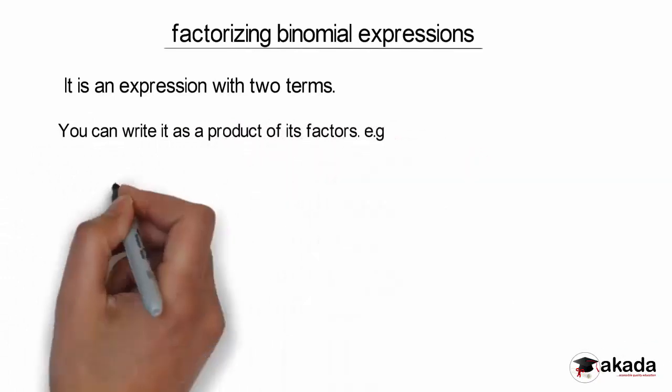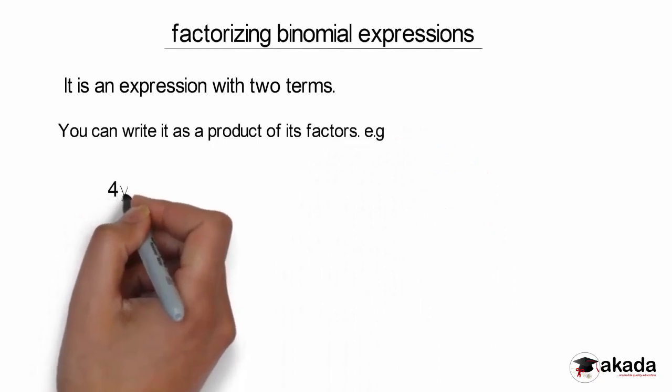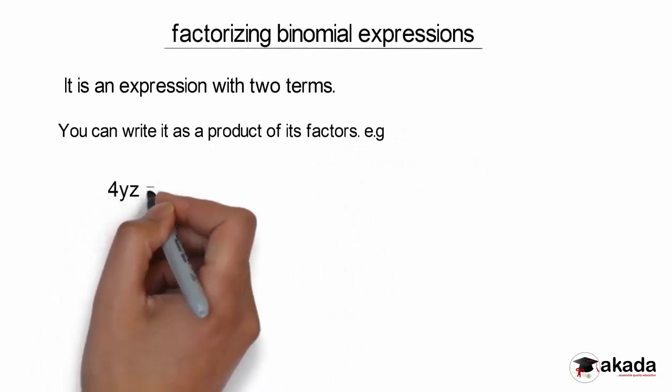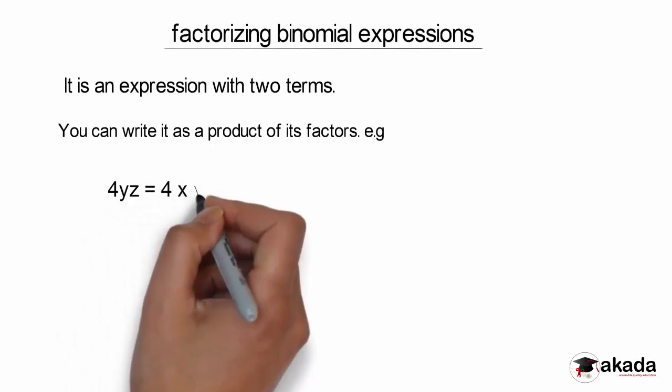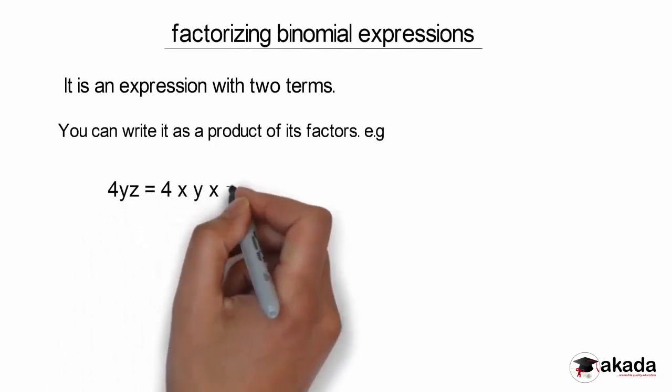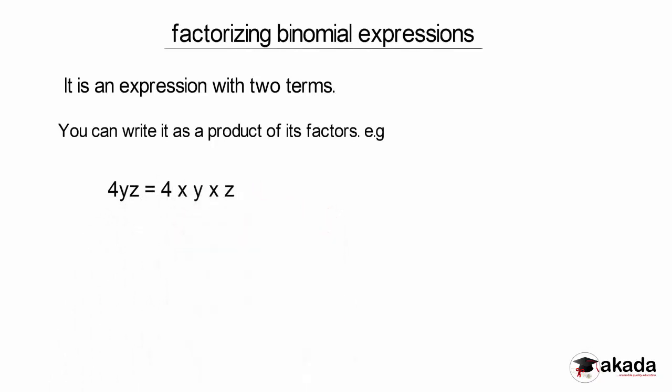For example, I have 4yz. What are the factors of 4yz? The factors of 4yz are 4 multiplied by y multiplied by z, which gives us 4yz.